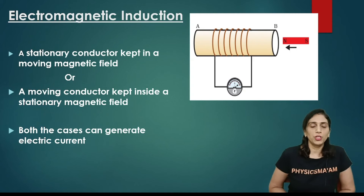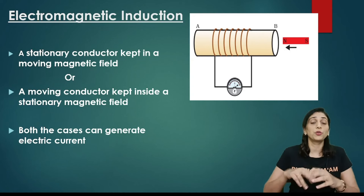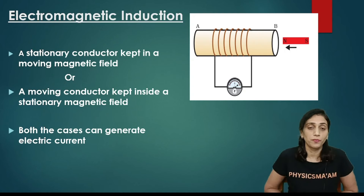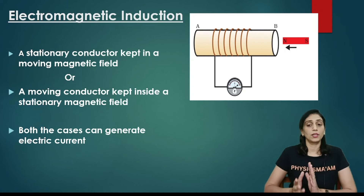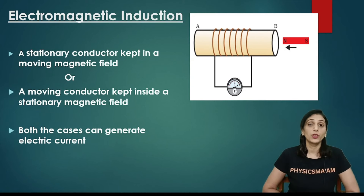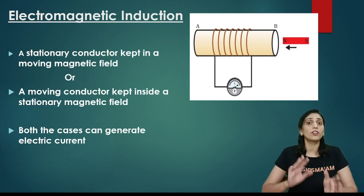In our previous video we have seen that when a conductor is kept in a magnetic field, it experiences a force and due to that force there is a motion of the conductor. So now, is it possible that the conductor is kept stationary and we keep moving the magnetic field? What will happen if I keep the conductor stationary and I change or move the magnetic field? Or can we do it the other way around — the conductor is moving inside a stationary magnetic field?